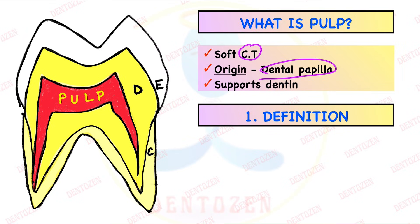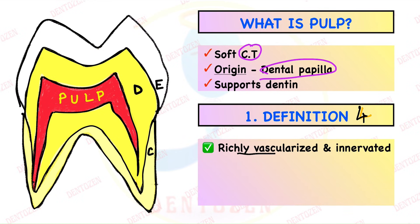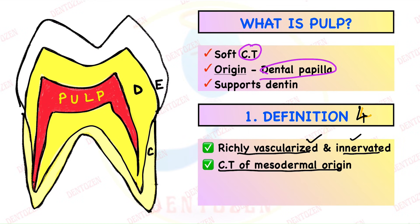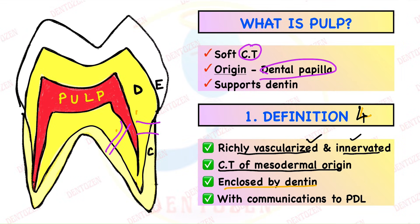Coming to the definition, we can learn it by dividing it into four parts. First, it is richly vascularized and innervated — vessels and nerves. Second, it is connective tissue of mesodermal origin. Third, it is enclosed by dentin from all sides. But despite that, fourth, it can have communications with the periodontal ligaments.